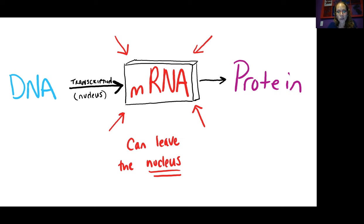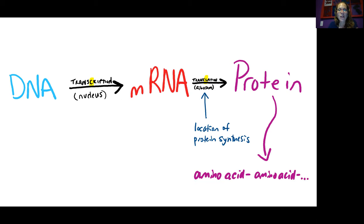it's able to fit through the nuclear pore, leave the nucleus, and go out to the ribosome in order to make the protein. Making the protein — going from mRNA to protein — is called translation. So here we see that there are two major processes required to go from our DNA molecule to our protein. These processes are called transcription and translation.